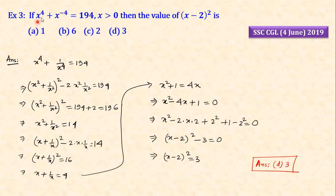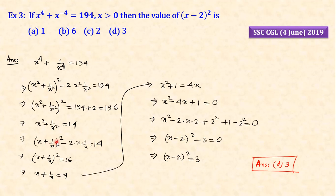Next question: x to the power 4 plus x to the power minus 4 equals 194. Taking root we get x² plus 1/x² equals 14. Using the a² plus b² formula — that is a plus b whole square minus 2ab — we get 14. Then x plus 1/x equals 4. Multiplying by x: x² plus 1 equals 4x. Rearranging, x minus 2a whole square gives value 3.